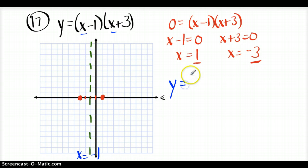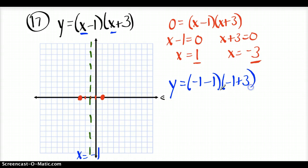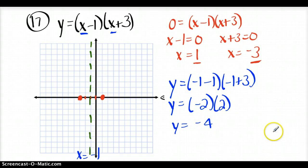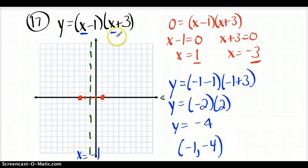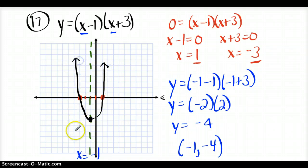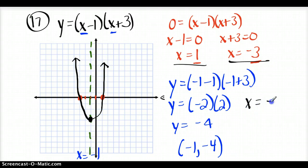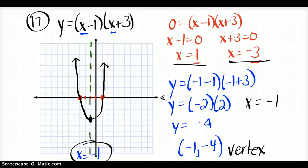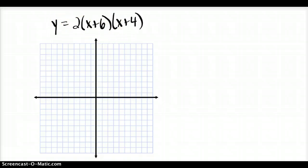To find the vertex, you plug that axis of symmetry value in for x to solve for y. Going back to the original function, I put negative 1 in for x in both places: negative 1 minus 1 and negative 1 plus 3 gives y equals negative 2 times 2, which is negative 4. So the vertex is (-1, -4). The parabola goes through all three of those points. Your axis of symmetry was x equals negative 1 and the vertex was (-1, -4).